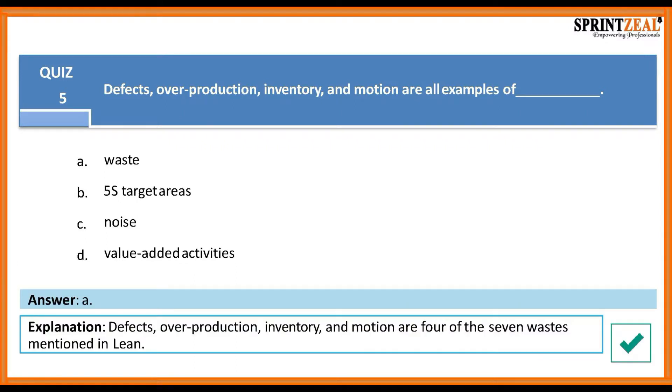The answer is A. Defects, overproduction, inventory, and motion are four of the seven wastes that we mentioned in Lean.